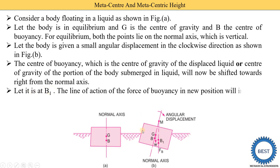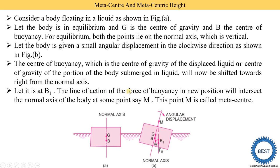Let the new buoyancy point be b1. The line of action of the force of buoyancy in the new position will intersect the normal axis of the body at some point. If this point is called m, then m is the metacenter: from point b1 we draw one vertical axis, and this vertical axis intersects the normal axis. When they intersect, this point is called the metacenter and it is denoted by m.